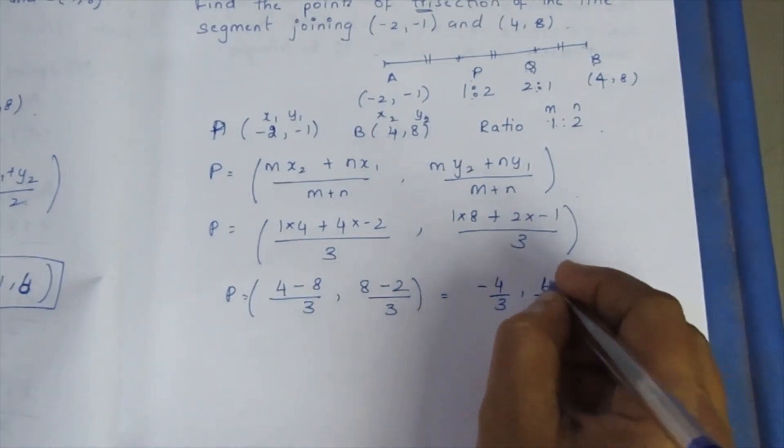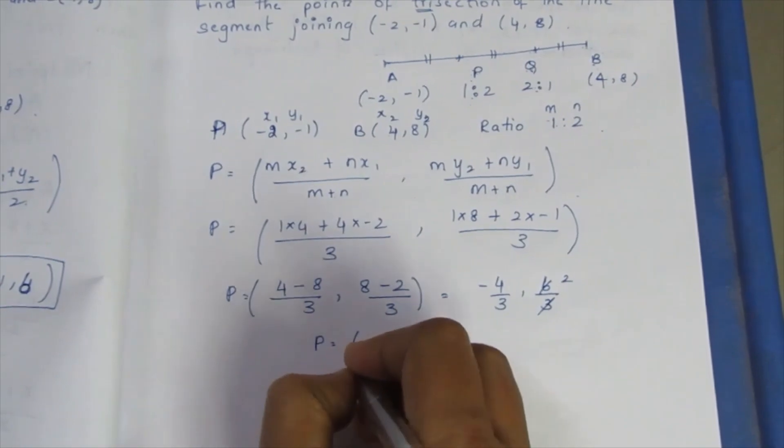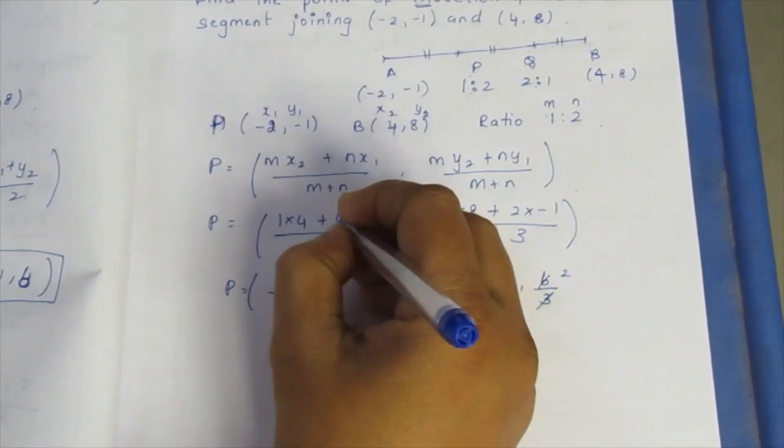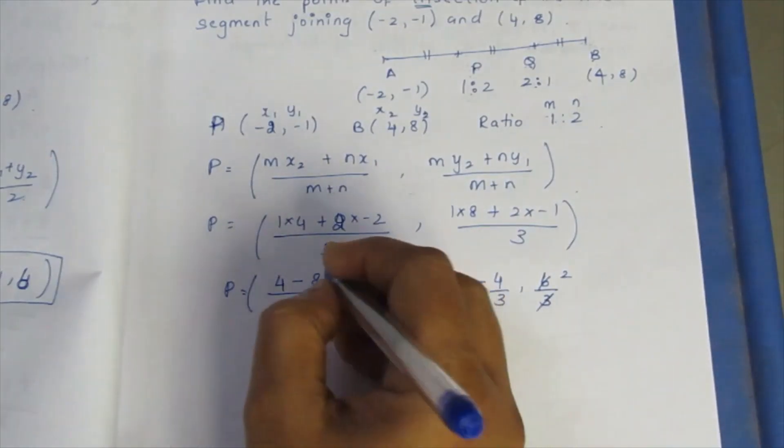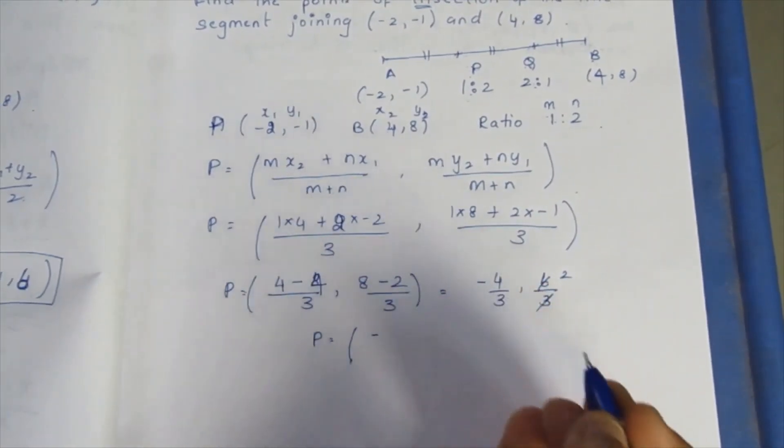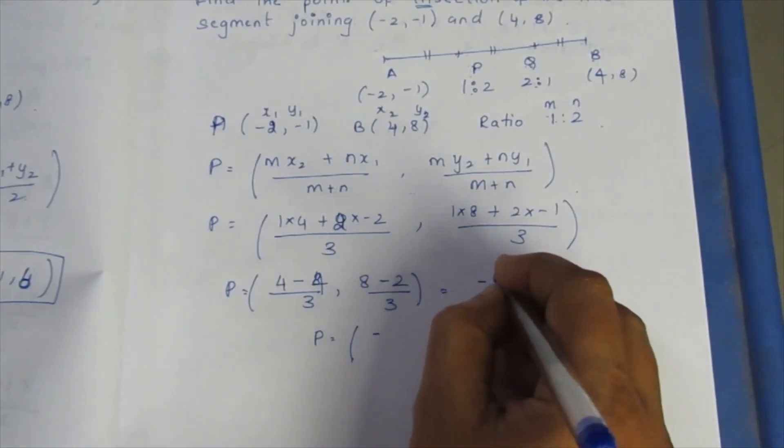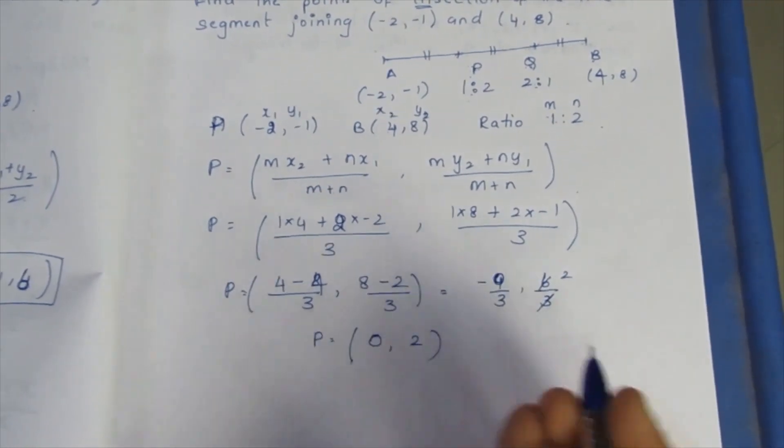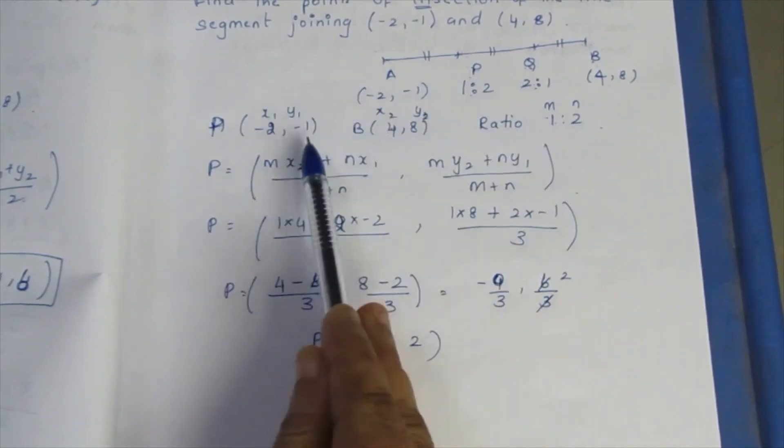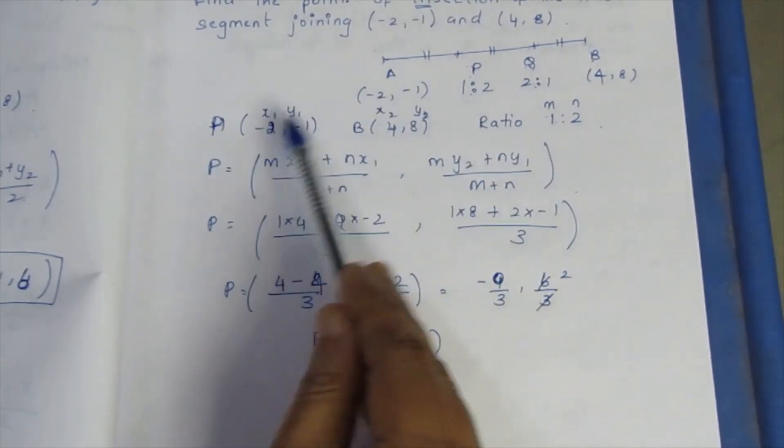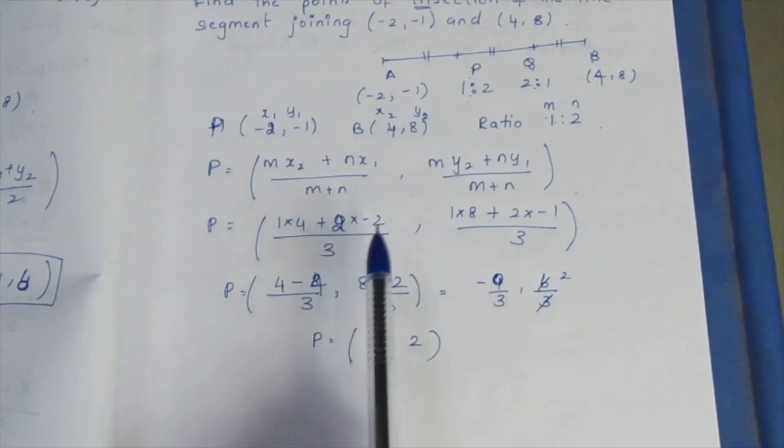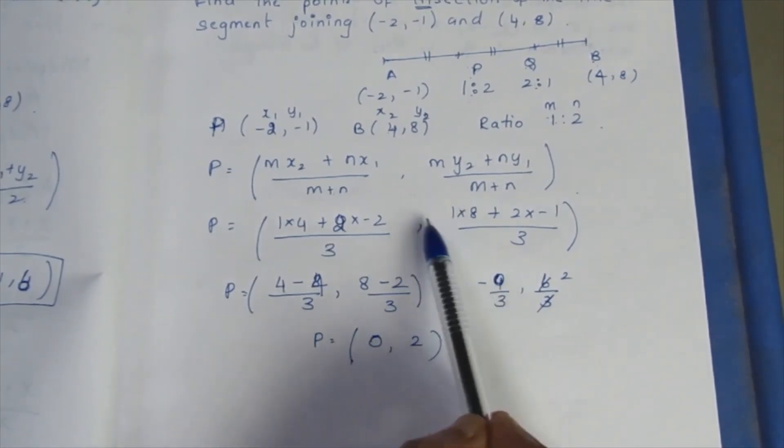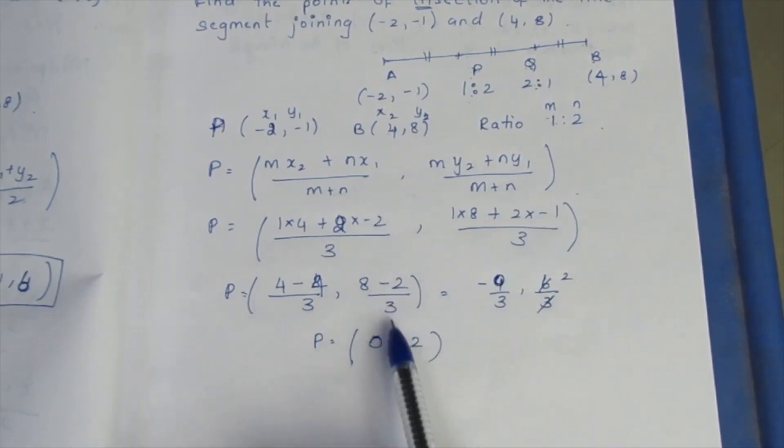Which cancels, so P is equal to: 2 into (-2), minus 4 equals 0, so 0 by 3 is 0. 2 into (-1): 4 minus 4 is 0, 8 minus 2 is 6 divided by 3, so P = (0, 2).